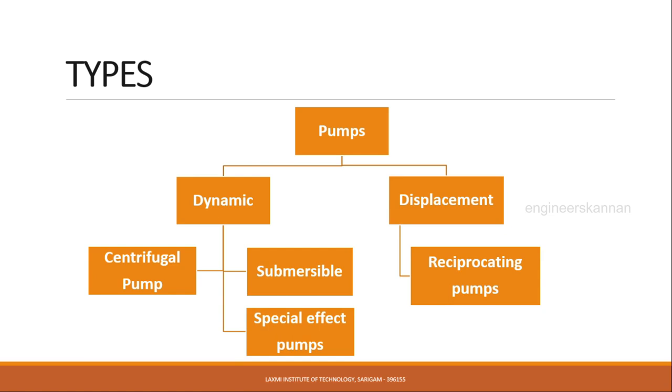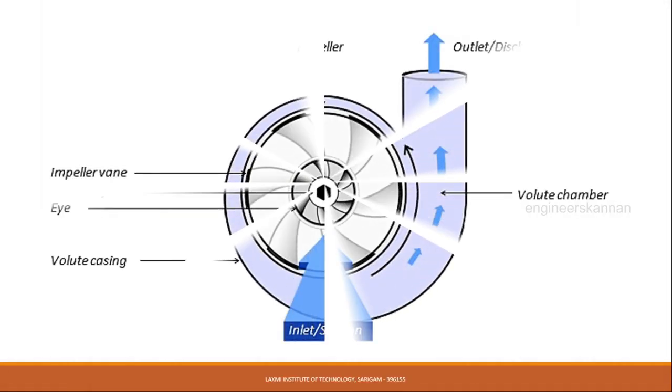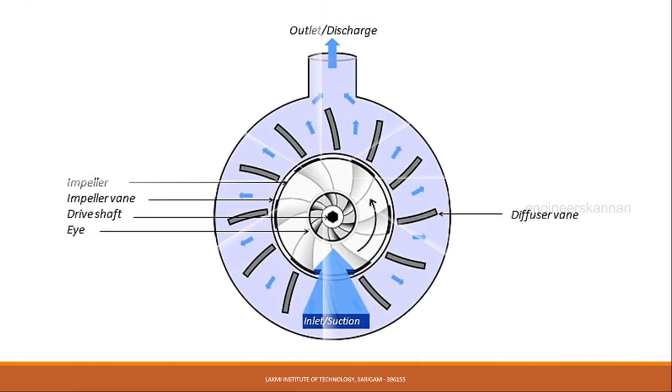The major parts of the centrifugal pump are impeller and diffuser. Water enters the center of the impeller and exits with the help of centrifugal force. When water leaves the impeller, it creates low pressure so more water flows into the eye. The velocity is developed as water flows through the impeller, which is spinning at very high speed with the help of an electrical motor.